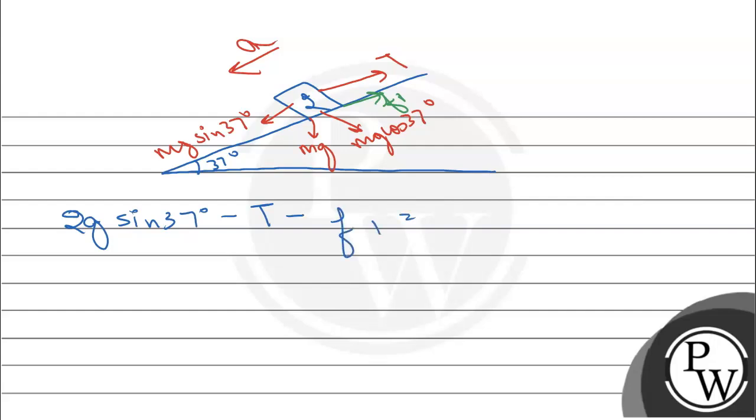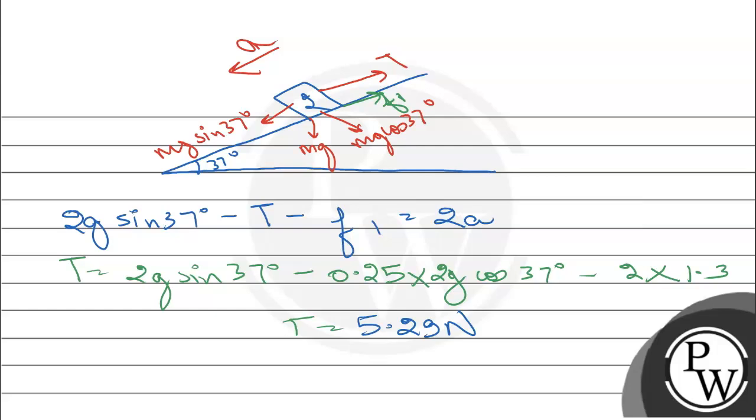If we write all equations, it will be 2g sin 37 degree minus T minus friction force f1 equals 2a which is the net force. So T equals 2g sin 37 degree minus 0.25 times 2g cos 37 degree minus 2 times 1.3. Tension is T equals 5.29 Newton.